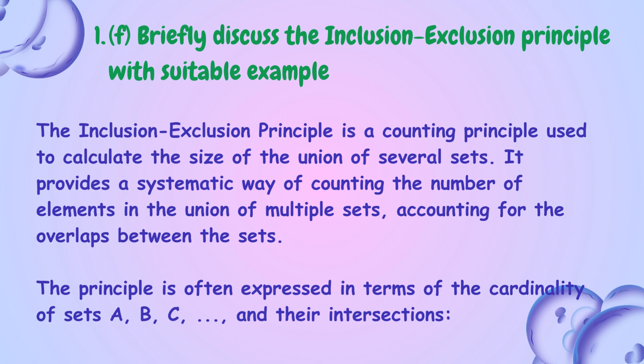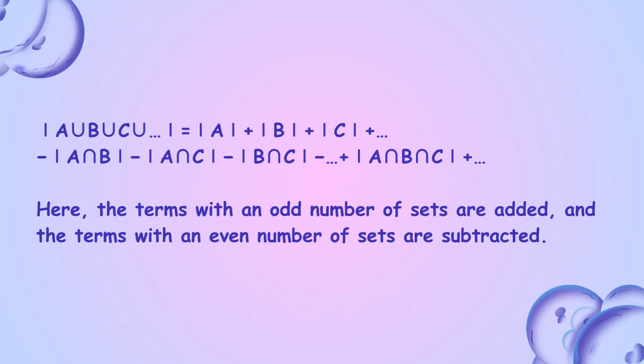The inclusion-exclusion principle is often expressed in terms of the cardinality of sets A, B, C, and their intersections. The terms with an odd number of sets are added, and the terms with an even number of sets are subtracted.